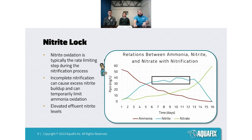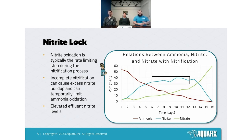One specific problem arising from the two-step nitrification process is nitrite lock. Since nitrite oxidizers are reliant on a product produced by ammonia oxidizers, there can be a lag in nitrite oxidizer population growth. This leads to ammonia oxidizers consuming all the ammonia and producing a bunch of nitrite that gets stuck in your system. Sustained elevated nitrite can lead to chlorine sponge — the nitrite reacts with chlorine before it does its intended job, potentially resulting in elevated coliform levels in your effluent.